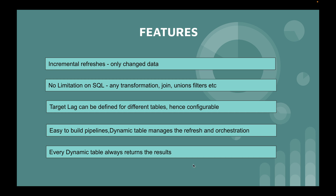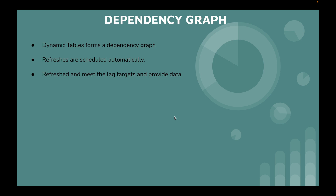Every dynamic table always returns results due to snapshot isolation — queries are never blocked by an ongoing table update. Importantly, when you create dynamic tables, Snowflake internally builds a dependency graph, which you can view in the Snowflake Snowsight UI. Refreshes are scheduled automatically based on TARGET_LAG and continue until you suspend them.